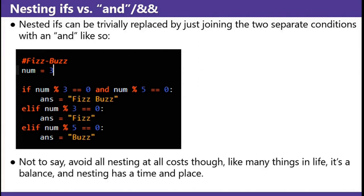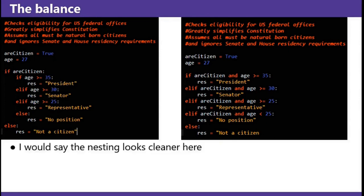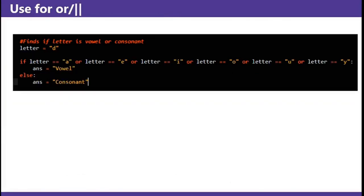Not to say avoid all nesting at all costs though — like many things in life, it's a balance and nesting has a time and place. The balance: this checks eligibility for U.S. federal offices. On the left example, if you are a citizen, it nests and asks you the age question for the various things. On the right example, it asks every time 'are you a citizen and what's your age?' I would say the nesting looks cleaner here as you're not asking 'are you a citizen?' four times. The balance is: try not to ask the same question over and over again, and avoid nesting deeper than three levels — it gets stupid to handle and think about. Use of the OR: this finds if a letter is a vowel or consonant. If it's an A or E or I or O or U or Y, it's a vowel; else, it's a consonant.